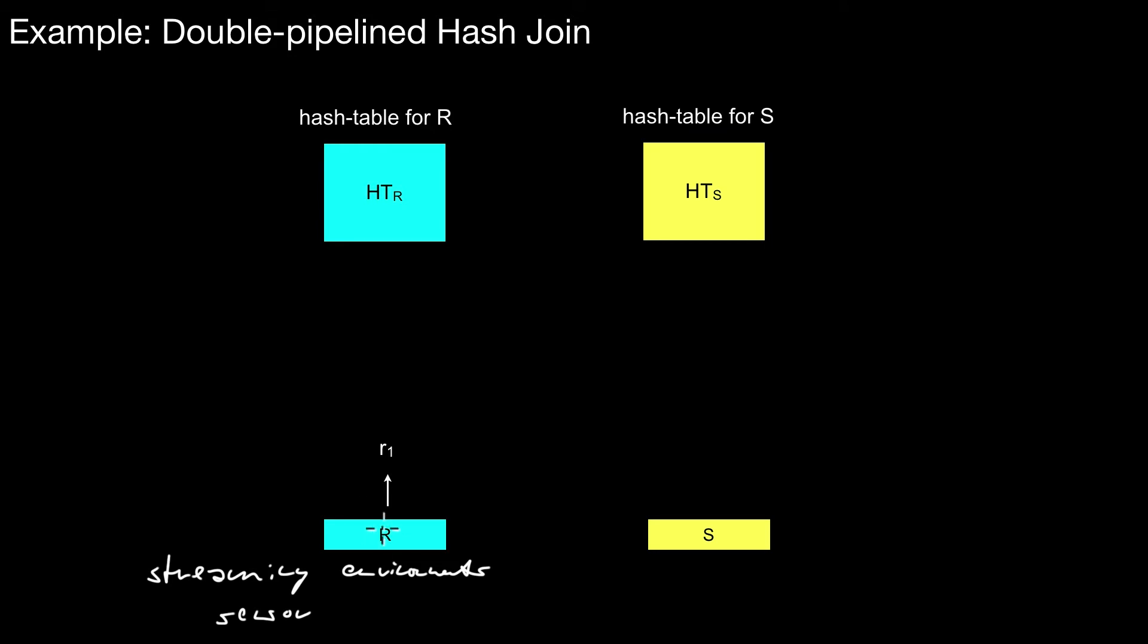Then you can't run the standard join algorithms because those algorithms assume that the sets are finite. So how does this double pipeline hash join work?